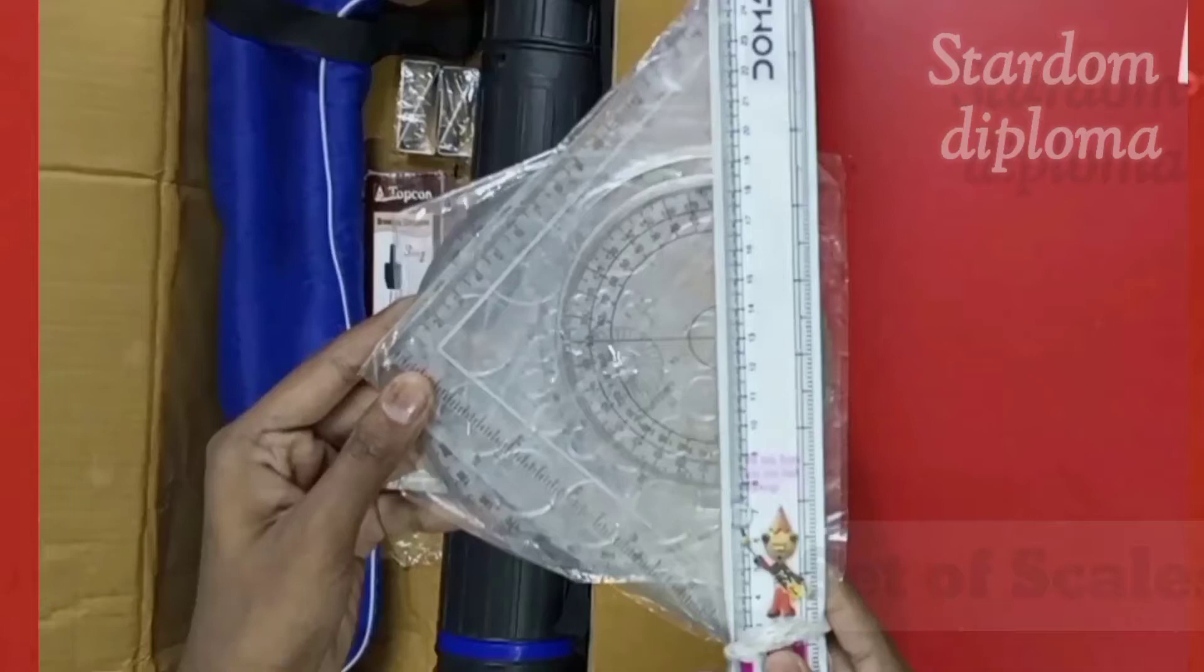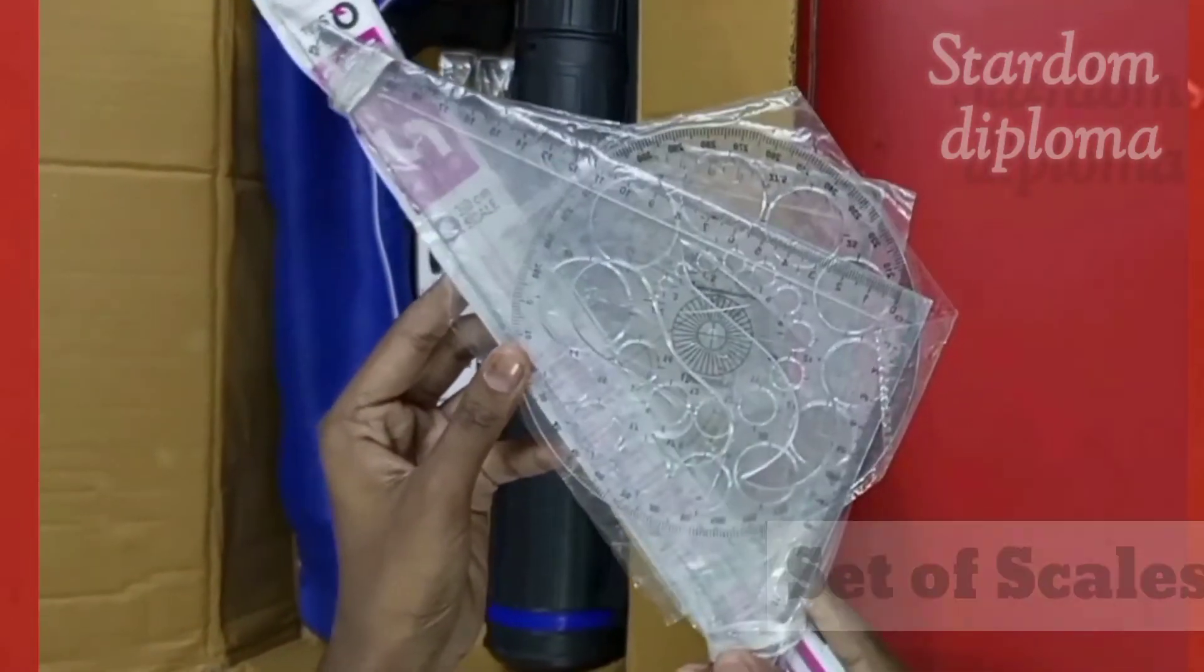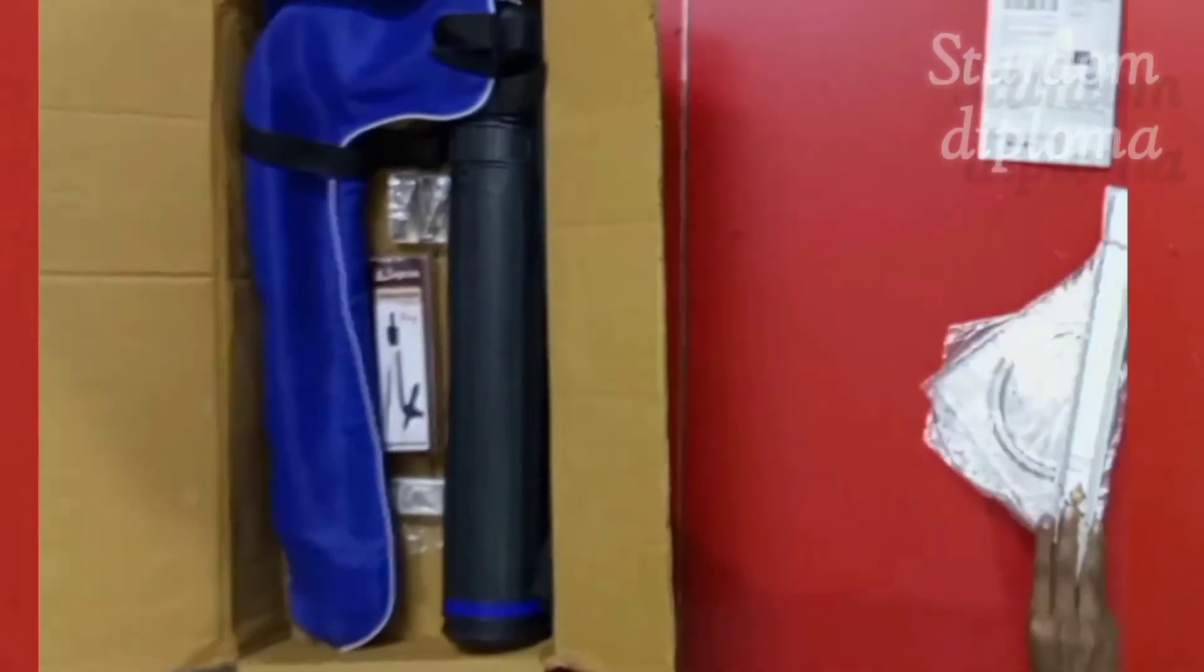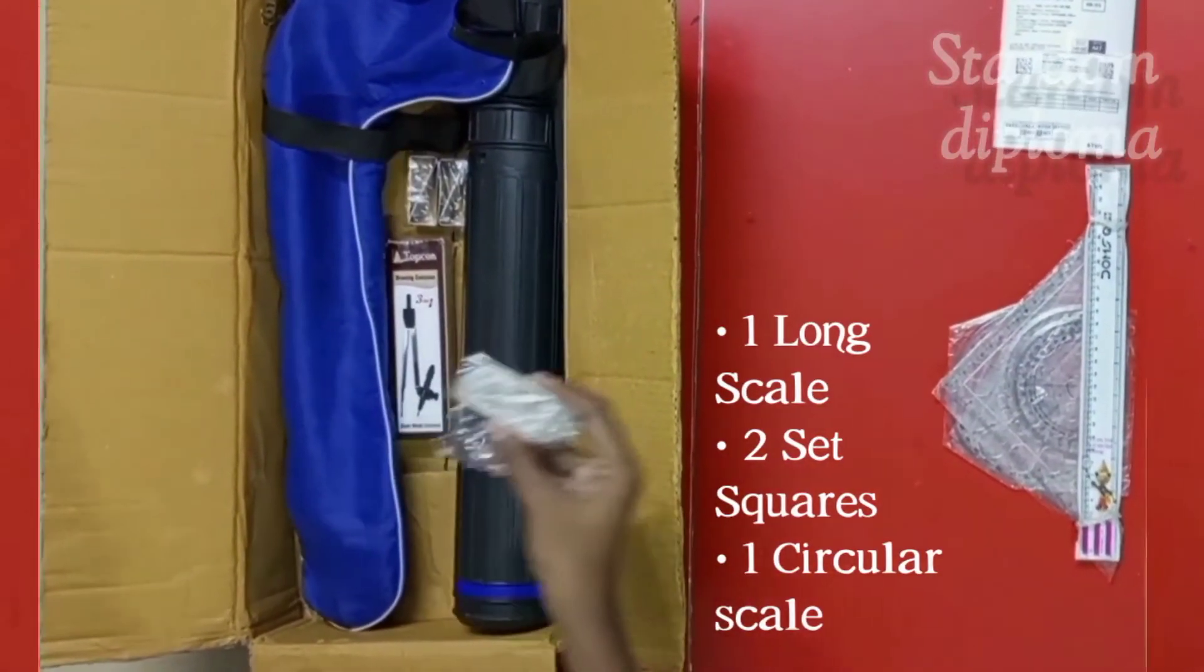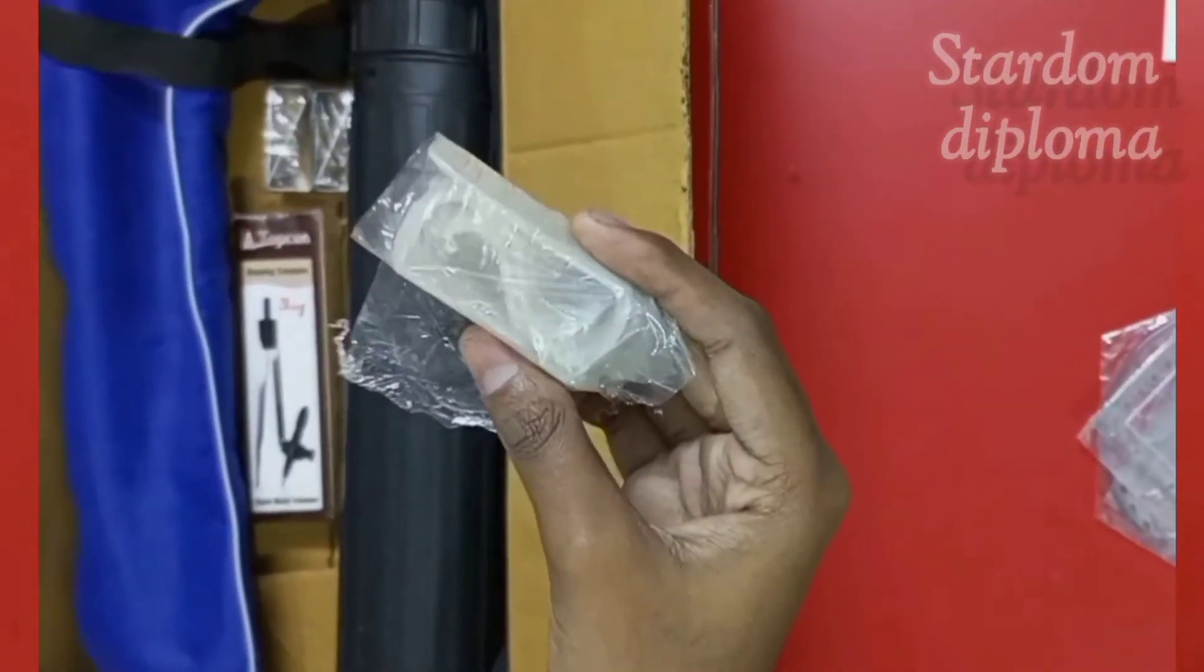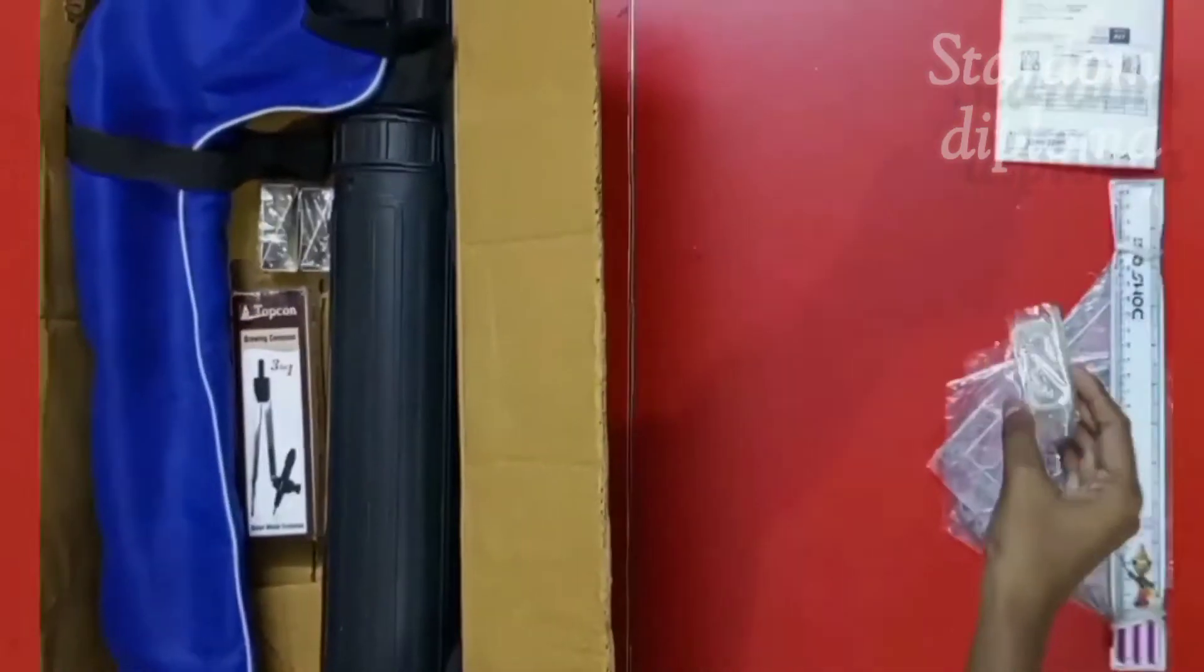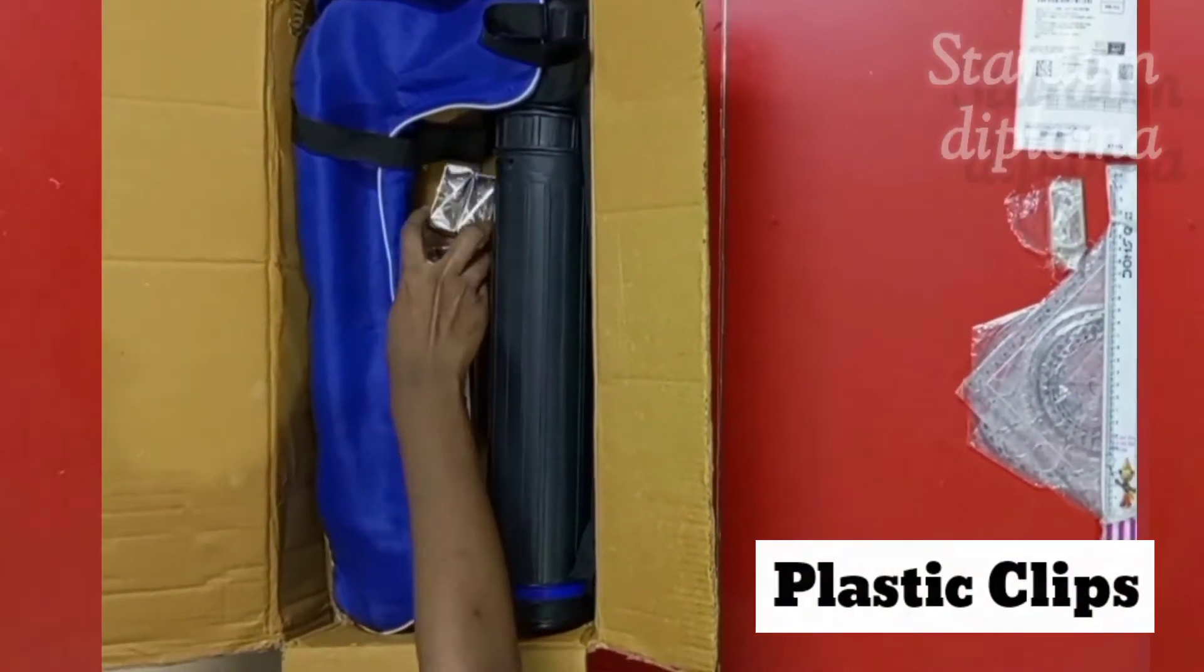And after opening, here we are having a set of scales. In this set, we are having different types of scales. A long scale is there, two set squares are there and a circular scale is there. We will open and see about each one. Next, we are having two pairs of plastic clips. Here I am having a single pair. That means totally four pieces of plastic clips.